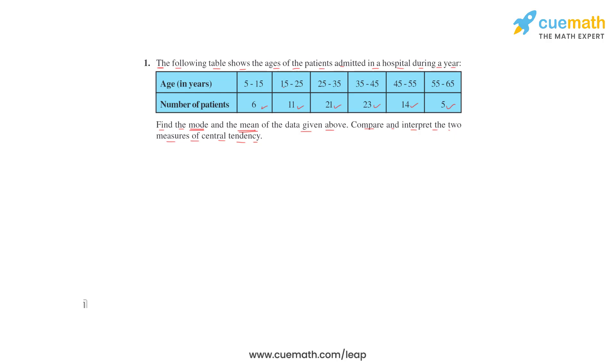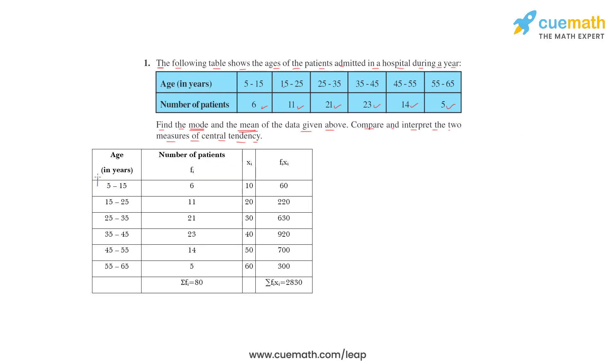So let's first find the mean. For that we will make the table. The ages, age in years is this, number of patients that is Fi, this one. Then we have to find Xi.